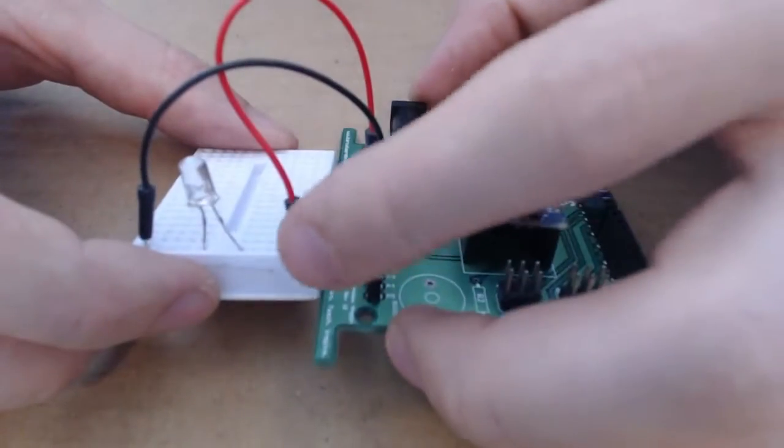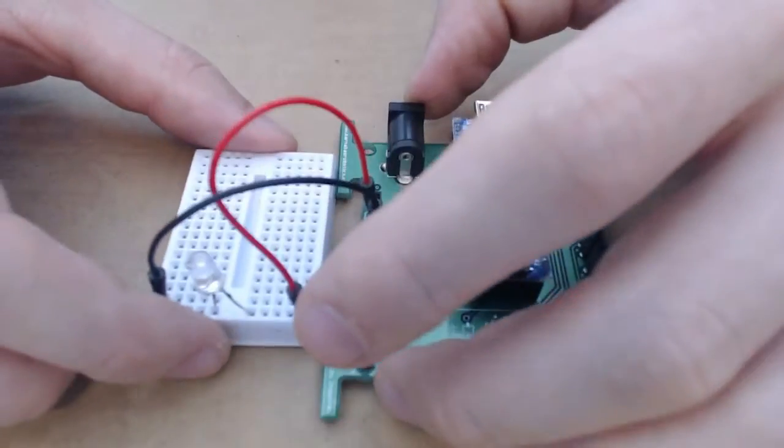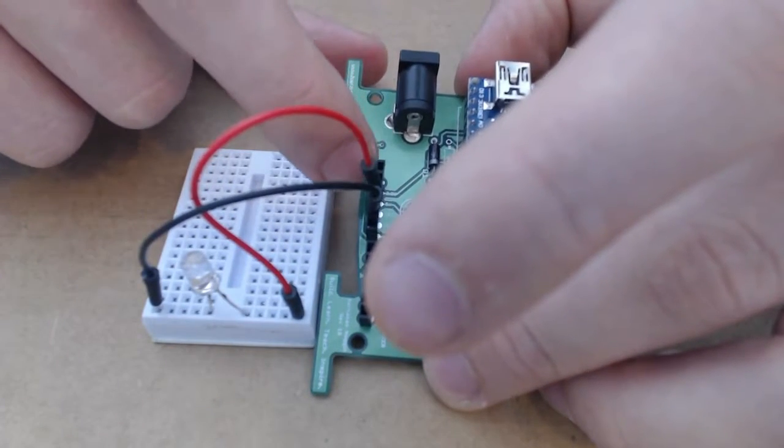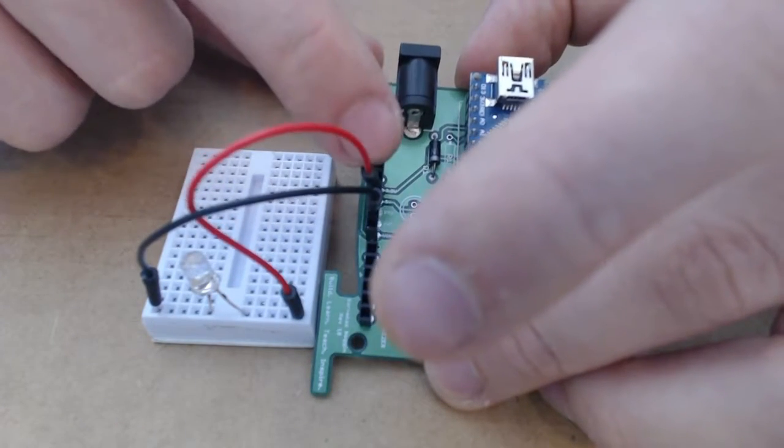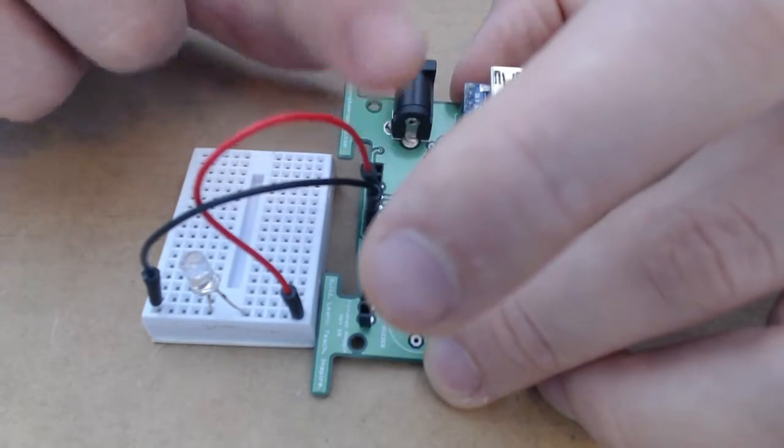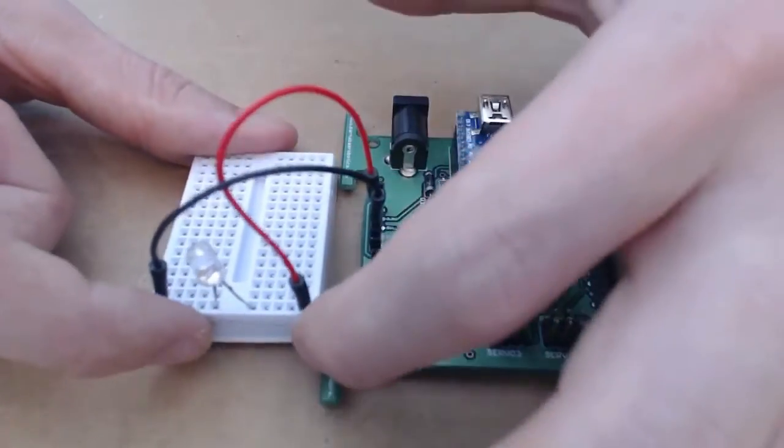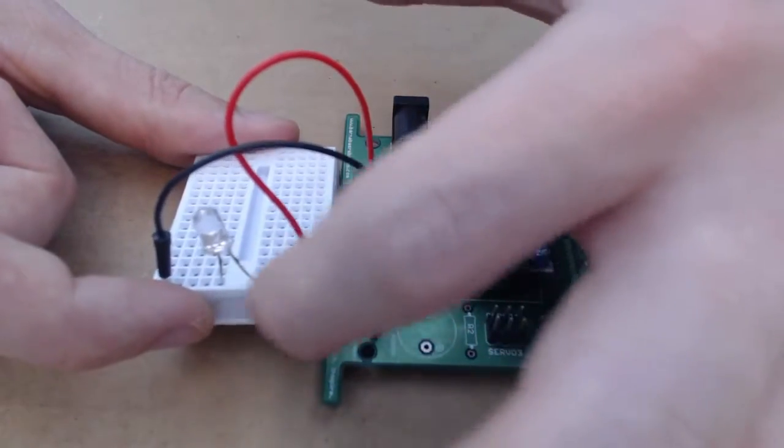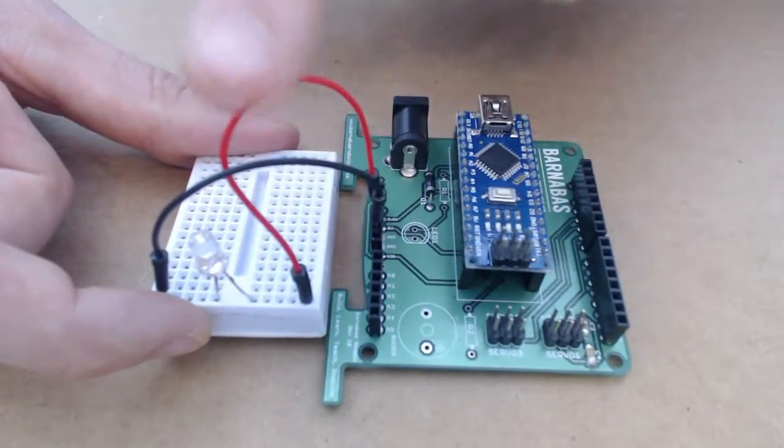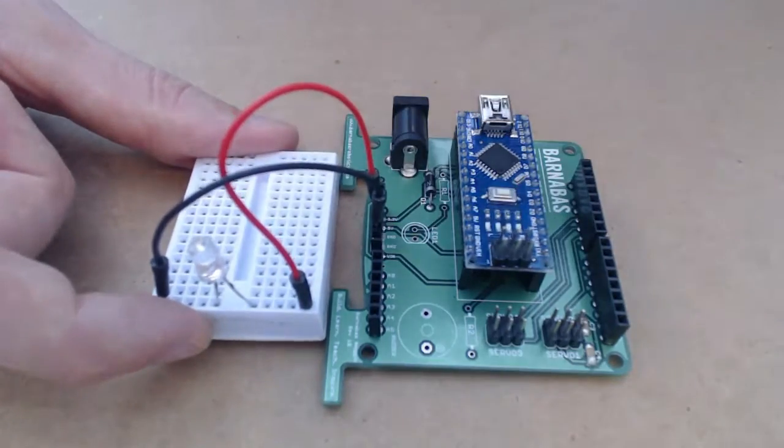So just to very briefly go over how this circuit is put together. There is a pin that says 5 volts on the Barnabas noggin and I have a red wire attached to that from there all the way over to this corner of our breadboard which is then on the same row as the long leg of the LED. Remember red goes with the long leg of the LED.